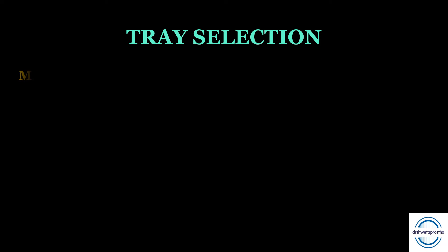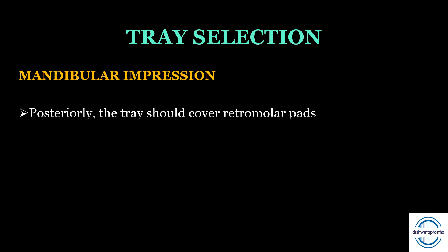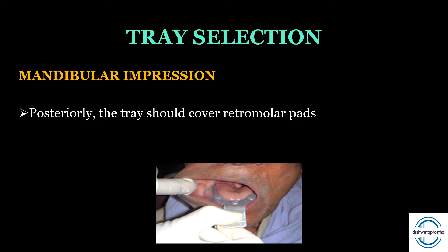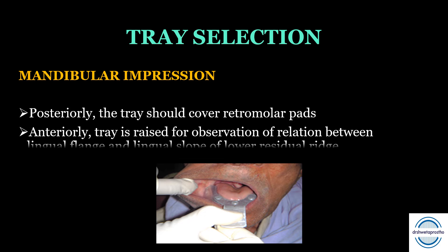For the mandibular tray selection, posteriorly the tray should cover the retromolar pads, and anteriorly the tray is raised to observe the relation between the lingual flange and the lingual slope of the lower ridge. There must be adequate space between the ridge and the tray to obtain a good impression.